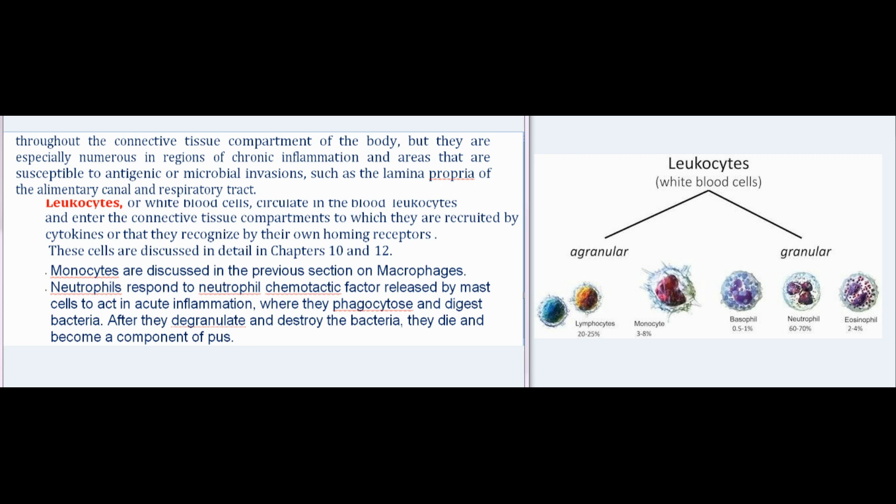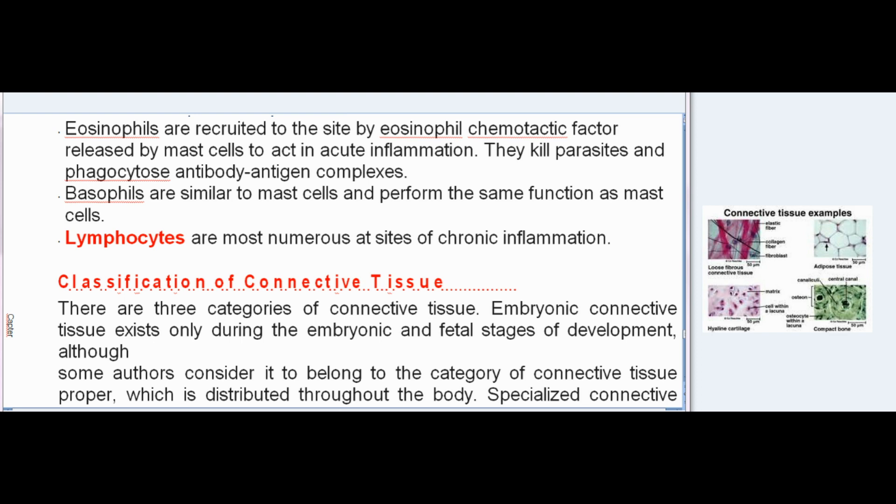Leukocytes (white blood cells) circulate in the blood and enter connective tissue compartments recruited by cytokines or via homing receptors. Neutrophils respond to neutrophil chemotactic factor released by mast cells, phagocytose and digest bacteria in acute inflammation, then die and become a component of pus. Eosinophils are recruited by eosinophil chemotactic factor to kill parasites and phagocytose antibody-antigen complexes. Basophils are similar to mast cells and perform the same functions. Lymphocytes are most numerous at sites of chronic inflammation.